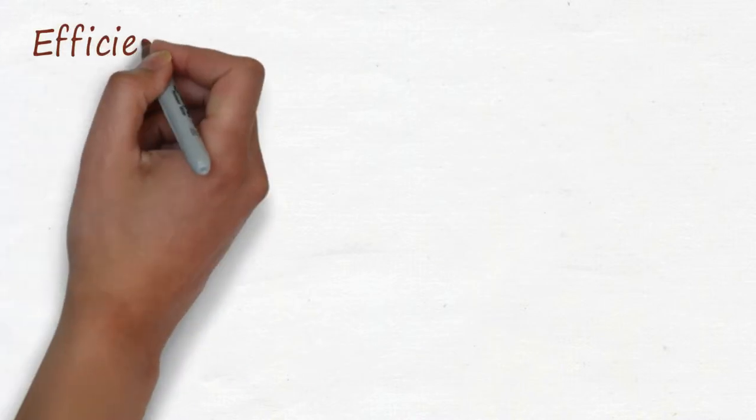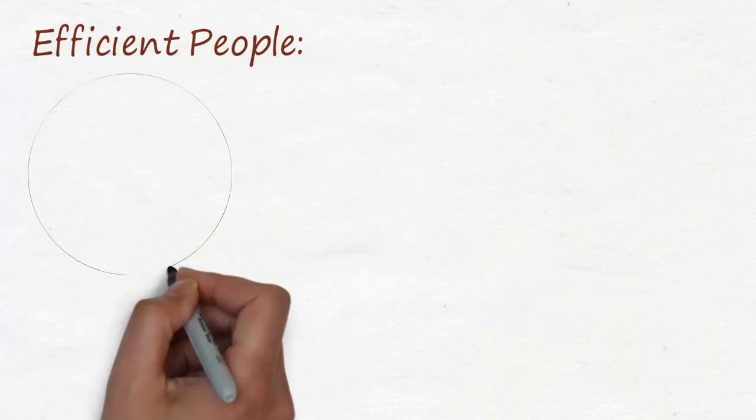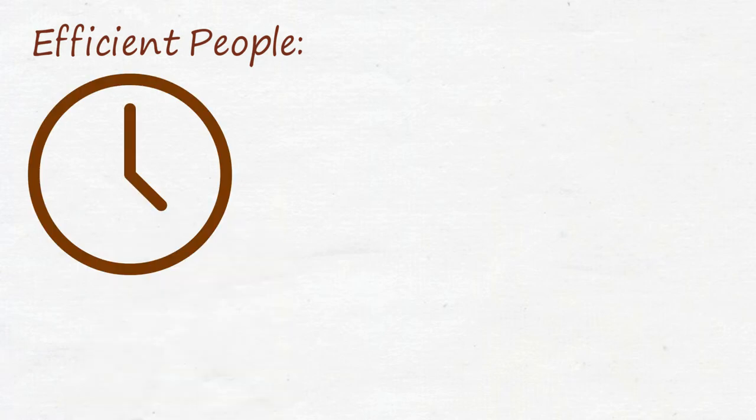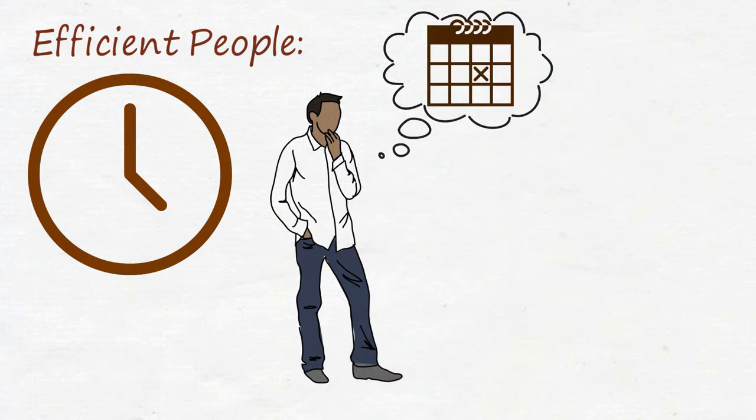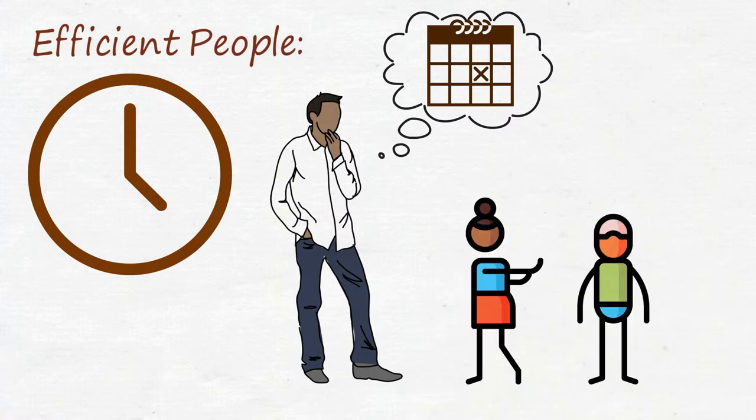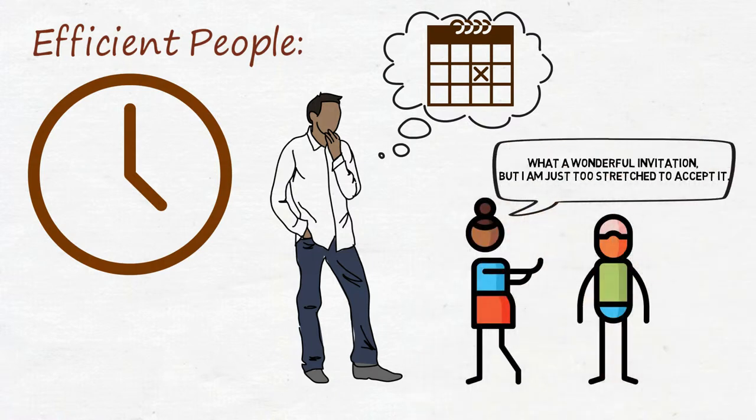Efficient people know that one of the valuable assets is their time. Before responding to others' requests or invitations, they consider their schedules or plans first. They don't want to waste their time if others' requests or invitations provide no values to them. They are not afraid to reject others, but of course, you need to be polite if you want to reject others. They will arrange their time to participate in valuable events which help them to achieve their goals.